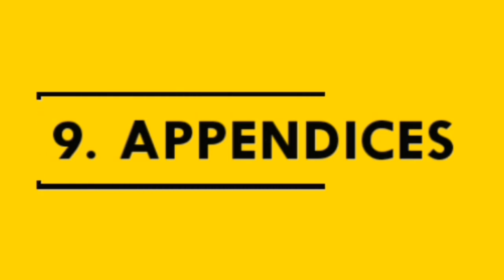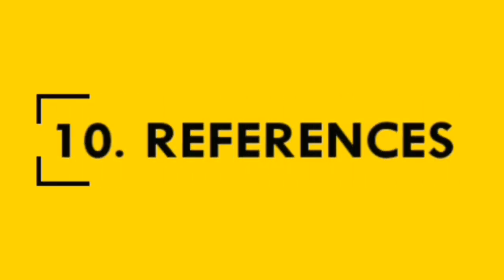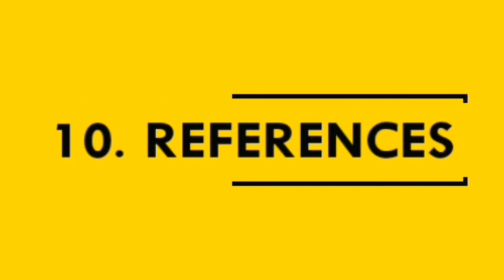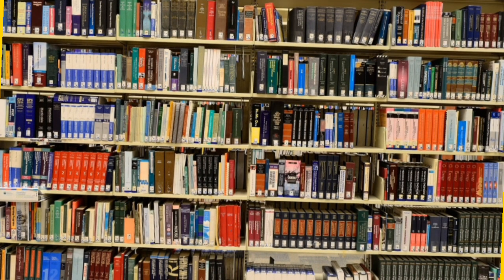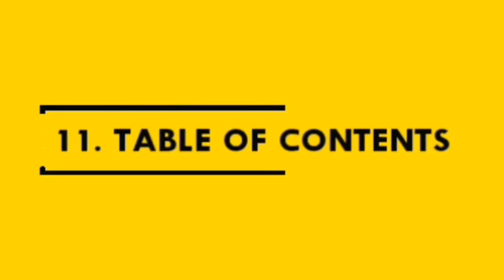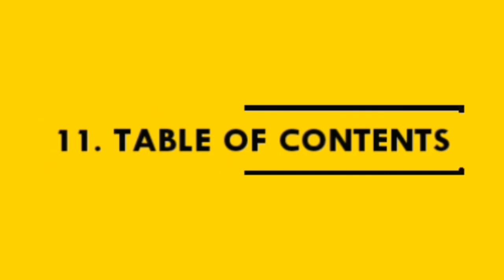Acknowledgements — the researcher thanks everyone who helped in completing the research. Appendices — can include pictures, graphs, graphics, charts, tables and figures. References — the researcher writes all references cited in the research, arranged according to the journal's guidelines. Table of Contents — when the number of pages is large, a table of contents is useful for easy access to each section.